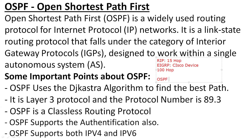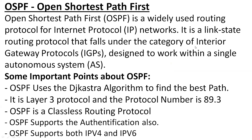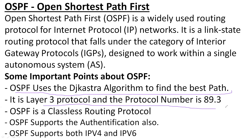OSPF protocol is a link state routing protocol. RIP and EIGRP are distance vector and advanced distance vector routing protocols. OSPF uses the Dijkstra algorithm to find the best path. It is a Layer 3 protocol with protocol number 89.